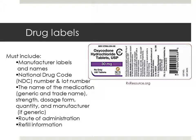Medication bottles from the manufacturer must also include certain information. The manufacturer's name is identified and it includes a national drug code or NDC number and a lot number. The NDC number is assigned to each medication and identifies the manufacturer, the product, and the size of the container. When you see it on the label it will say NDC followed by a 10-digit number. The name of the medication — including the generic and trade name — the strength, the dosage form, quantity, and manufacturer if generic also needs to be on there. The route of administration and refill information must also be included.